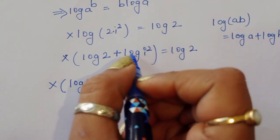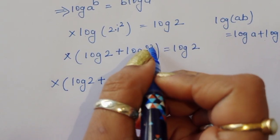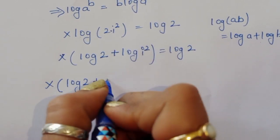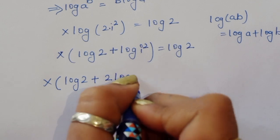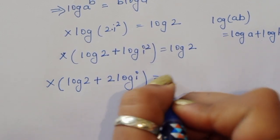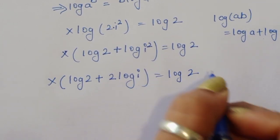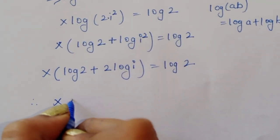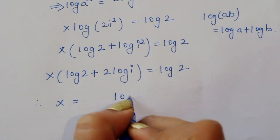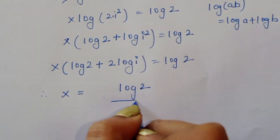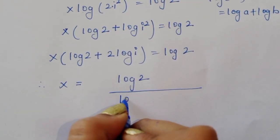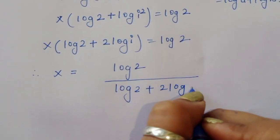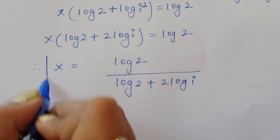Now log(i²) — using the formula log(a^b) = b·log(a) — becomes 2·log(i). So we have x·[log 2 + 2·log(i)] = log 2. Therefore the value of x = log 2 / (log 2 + 2·log i). This is the first method.